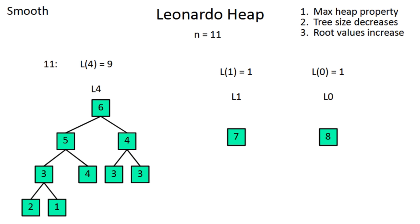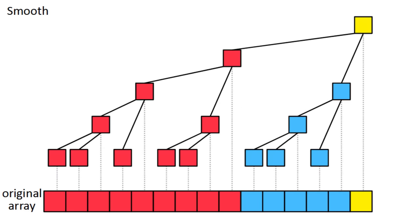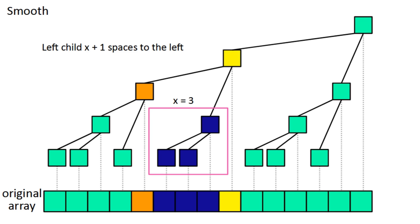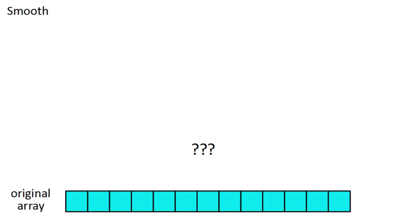Now how do we represent the leonardo heap implicitly? For a single tree, we just have the left subtree, then the right subtree, then the parent. This follows recursively. Each node has its right child one space to the left, and its left child x plus one spaces to the left, where x is the size of the right subtree. A leonardo heap will have multiple trees, so how do we know which trees are present if we're just looking at the array? Well, we can actually keep track of this with a single variable.